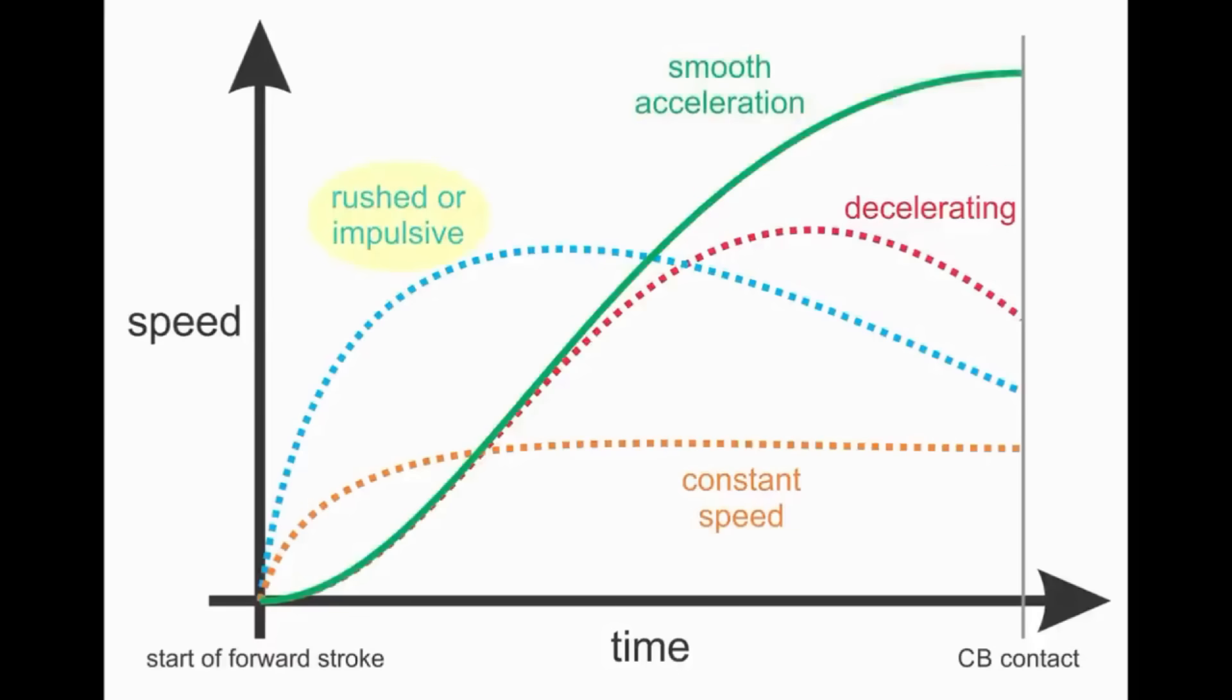People who rush the backswing transition or who try to create speed too quickly have a rushed or impulsive stroke. People who generate speed early but then slow down into the cue ball have a decelerating stroke. People who try to keep the speed constant over a long distance into the cue ball have a constant speed stroke.